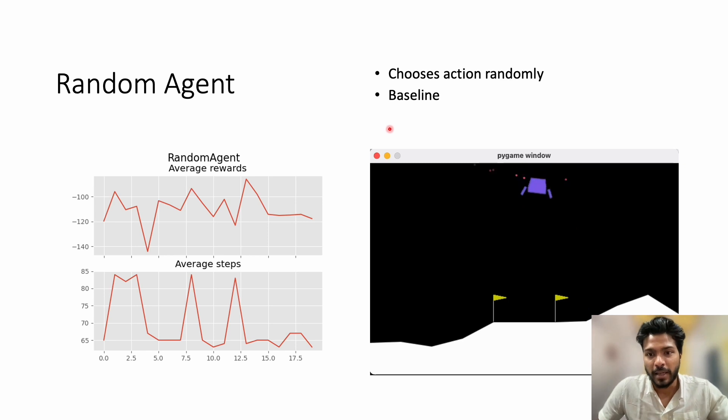I start with an agent which takes actions randomly. As we can see, the agent mostly crashes and gets negative rewards every episode.